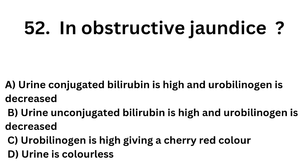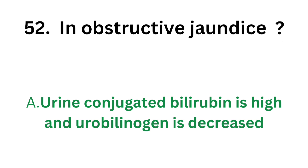Question number 52. Which of the following statements is correct about obstructive jaundice? Option A - Urine conjugated bilirubin is high and urobilinogen is decreased; Option B - Urine unconjugated bilirubin is high and urobilinogen is decreased; Option C - Urobilinogen is high giving a cherry red color; Option D - Urine is colorless. The correct answer is Option A. In obstructive jaundice, urine conjugated bilirubin is high and urobilinogen is decreased.